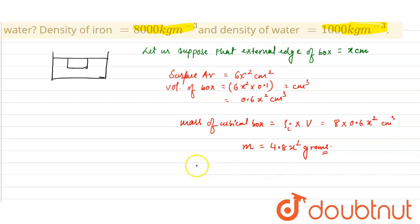We have calculated the mass. The weight of the cubical box will be 4.8x²g newtons.